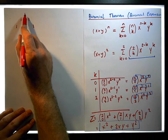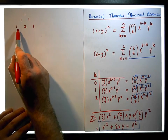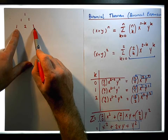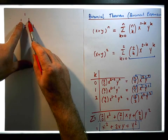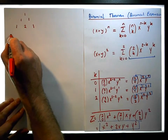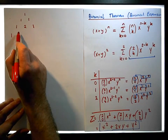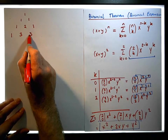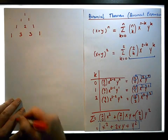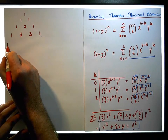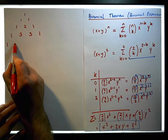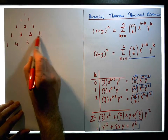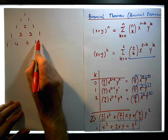The fourth row starts with a one, followed by the sum of the previous two entries which gives three, followed by the sum of the next two entries which gives three, followed by a final one. The next row starts with a one, followed by four, followed by six, followed by four, and ends with a one.